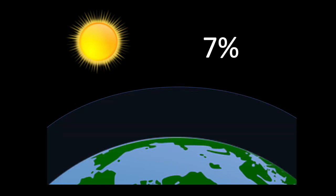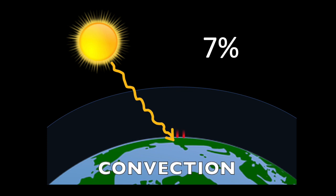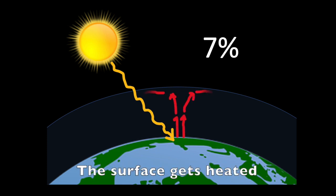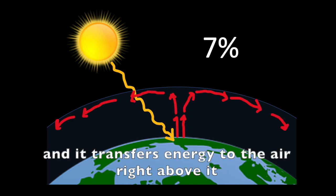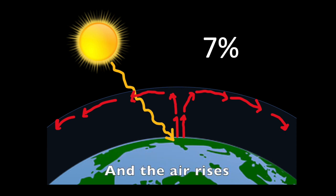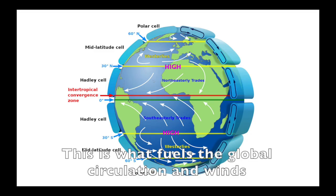Another 7% of the absorbed solar energy leaves the surface through convection. The surface gets heated and it transfers energy to the air right above it, and the air rises. And this is what fuels the global circulation and winds. But that's a story for another lesson.